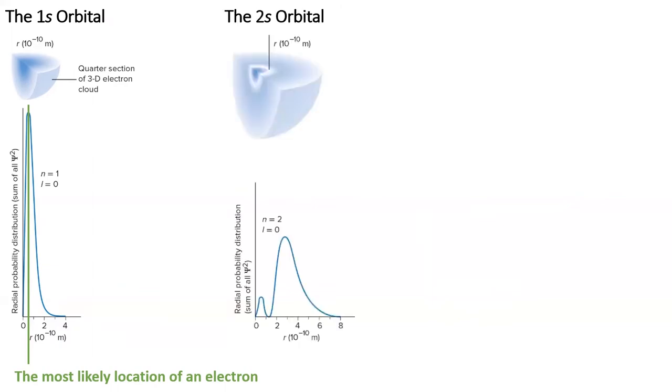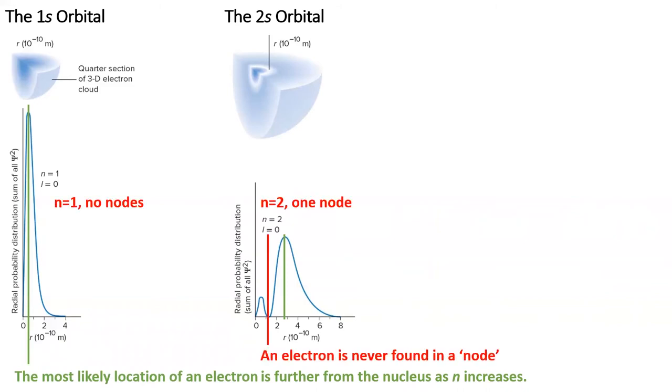The 2s orbital is larger than the 1s orbital, even though they both fit the same number of electrons, which is 2. Looking at the radial probability function at the bottom, we see that the most likely location of an electron in a 2s orbital is further from the nucleus than in the 1s orbital. We can also see a point where there is zero probability of finding an electron. This point is called a node. As n increases, the number of nodes increase.